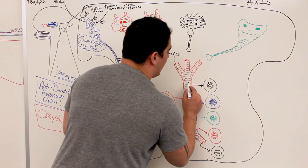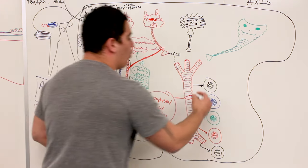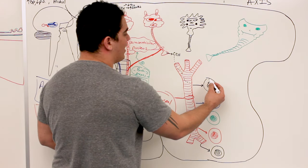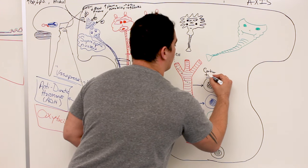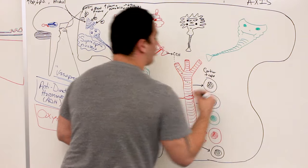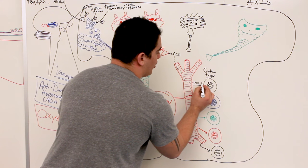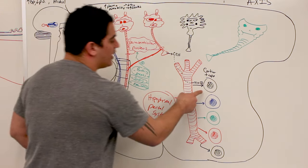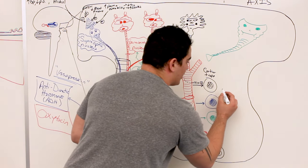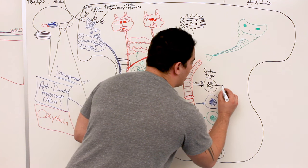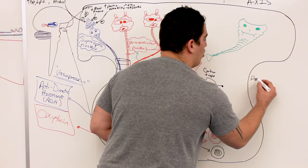CRH comes out through the secondary capillary plexus and stimulates a specific cell called a corticotrope. CRH stimulates the corticotrope to activate specific genes to transcribe and translate a specific protein.